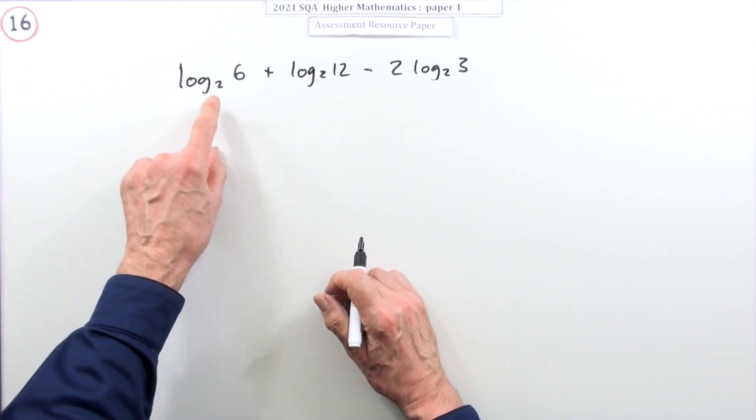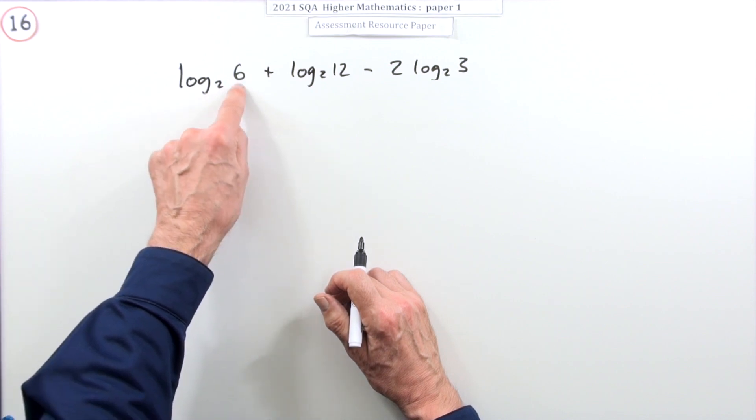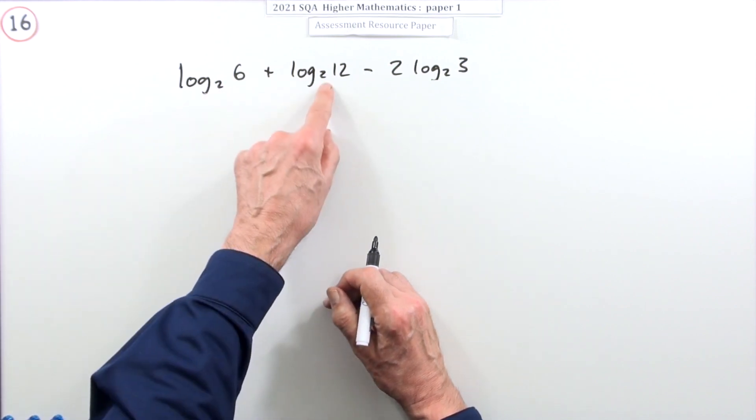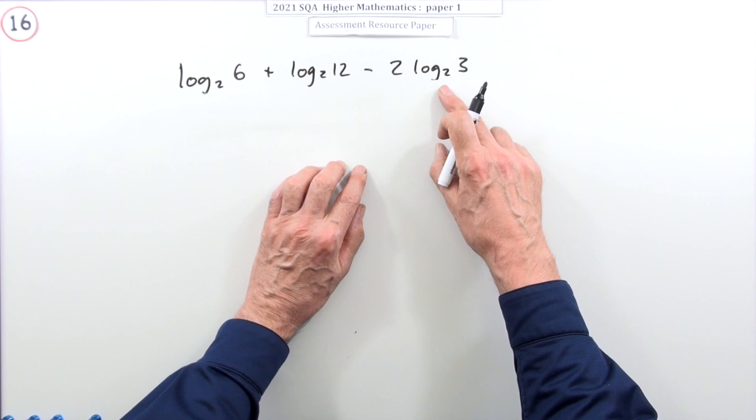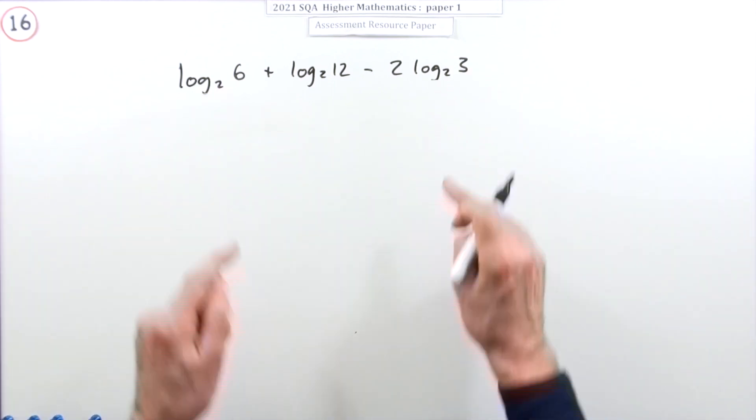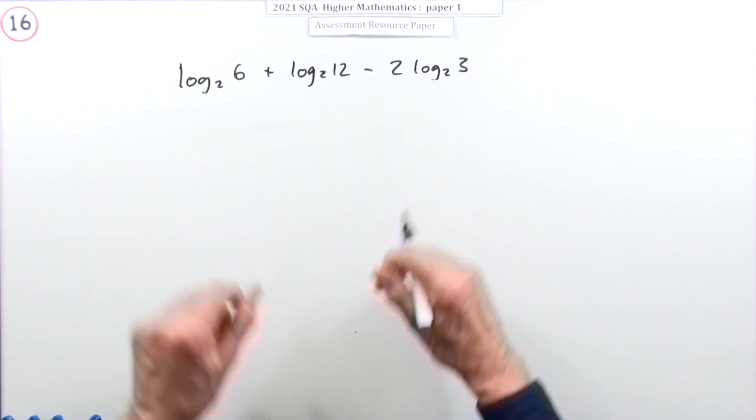Log base 2 simply means what power of 2 gives me this number? Well I don't know. What power of 2 gives me 12? I don't know. What power of 2 gives me 3? I don't know. That's why you need to use the laws of logs to somehow tidy that up.